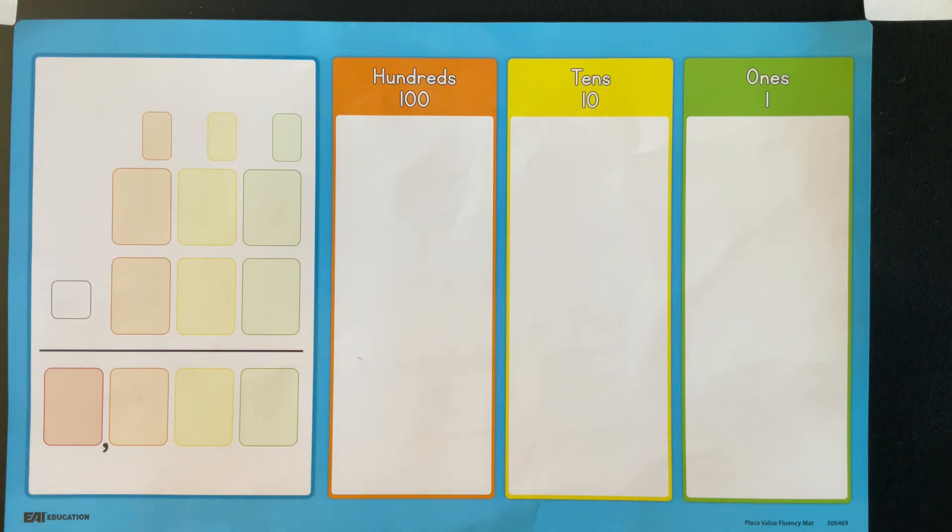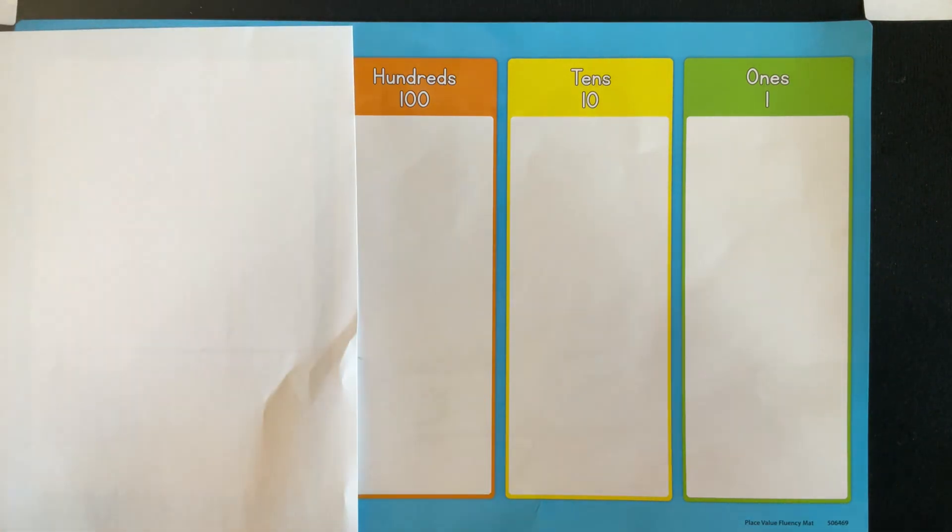One of the standards says that you should be able to add and subtract where anything could be unknown. That could be your start unknown, that could be your change unknown, and it could be either your sum or your difference. Let's start off with a problem and for purposes for this one I'm just going to write this on paper.